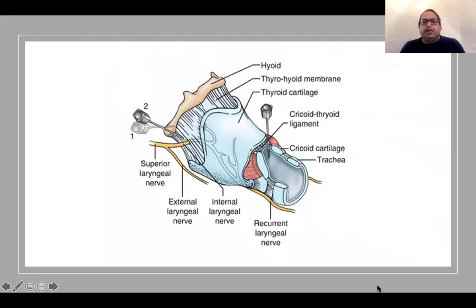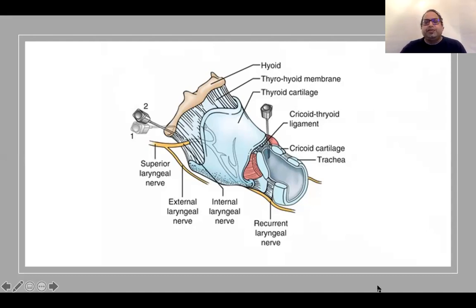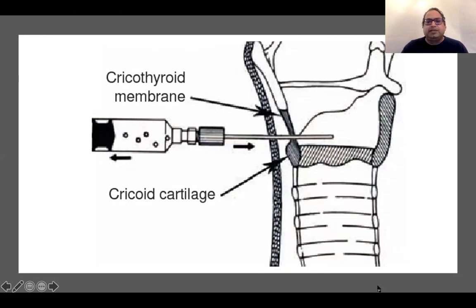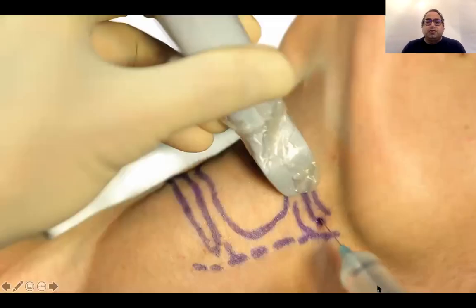To block the recurrent laryngeal nerve, you can perform a trans-tracheal injection through the cricothyroid membrane and inject local anaesthetic directly into the trachea. Deposit the local anaesthetic and let the patient cough — that will spread it both up and down. If you are experienced with ultrasound, you can also perform an ultrasound-guided block.